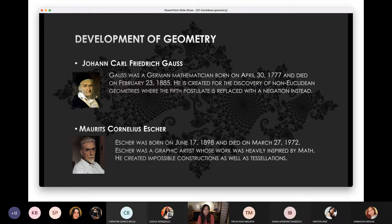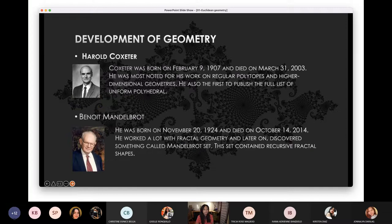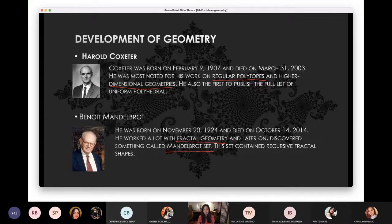The next one is Johann Carl Friedrich Gauss. He is a mathematician who moved from non-Euclidean geometries. We'll discuss him later, I will show you a video when we say non-Euclidean. Then the next one is Maurits Cornelis Escher. He is not really a mathematician, but he's a graphic artist. A graphic artist that's heavily inspired by mathematics. So he created impossible construction as well as tessellations.